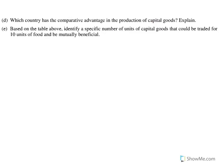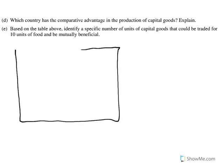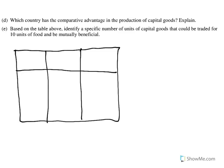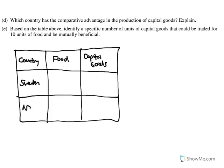Parts D and E get a little trickier because we need to do calculations with comparative advantage, and then terms of trade for part E. I'm going to draw the table here. We've got country, food, and capital goods — Sweden and Norway — with values 50, 30, 100, and 120.